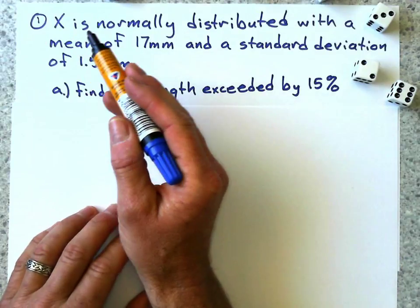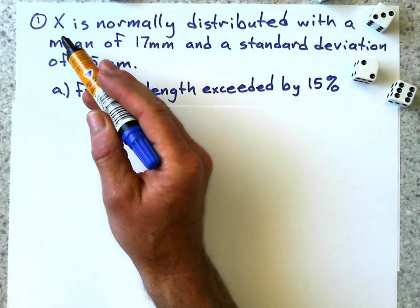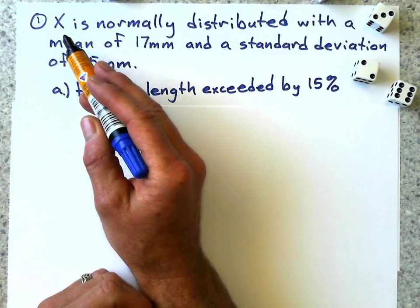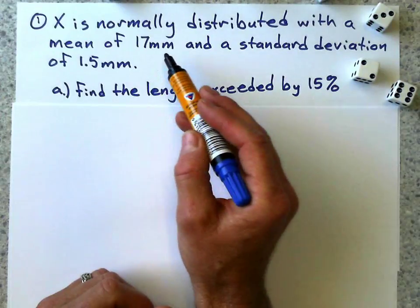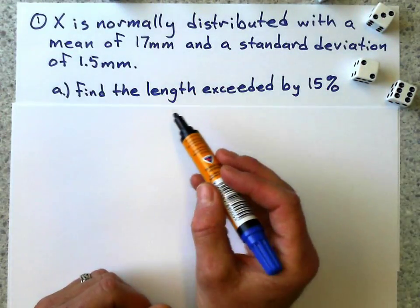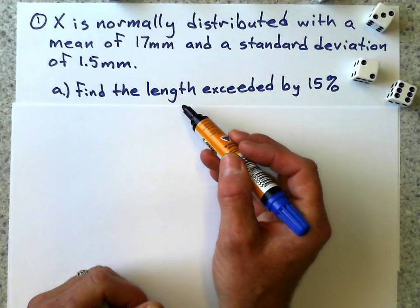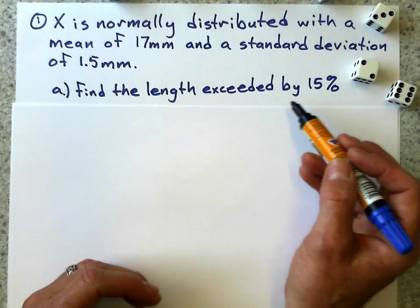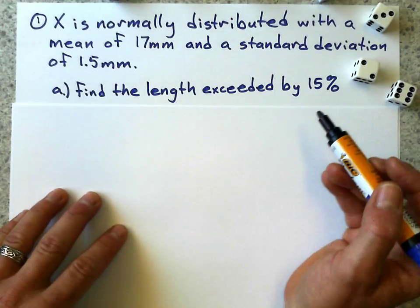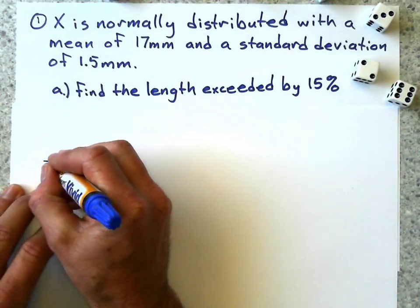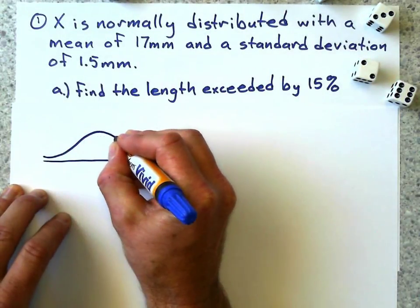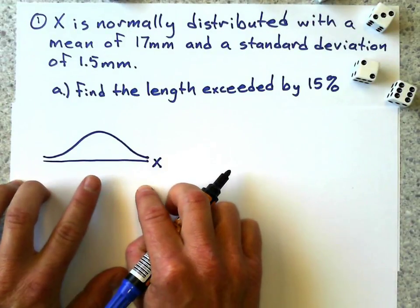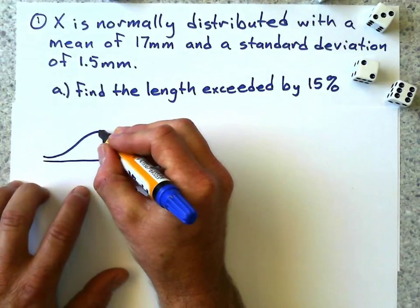Let's look at this. X, I just made up this problem, so that's why I called it x. It could be height of pine trees, height of students, weights of turtles, whatever. I'm saying it's normally distributed with a mean of 17 millimeters and a standard deviation of 1.5. Find the length, and that's what we're doing with inverse normal. We're given the probability and we're finding what the actual measurement is. Find the length exceeded by 15%. So the first thing I do is draw a picture of my normal curve. The mean is 17, and we're not going to set the mean to zero just yet.